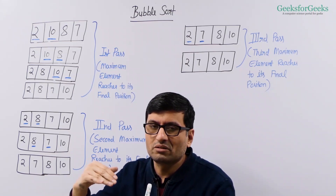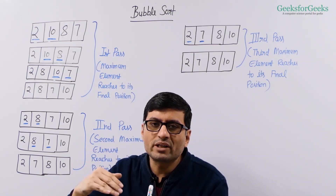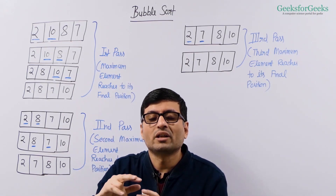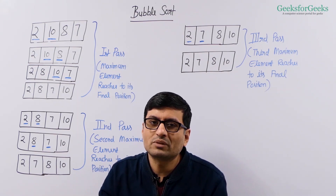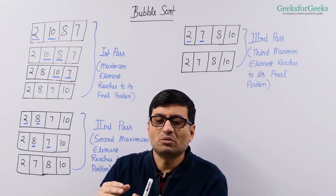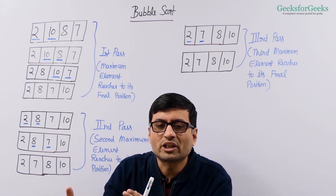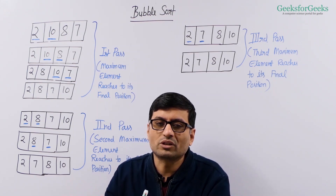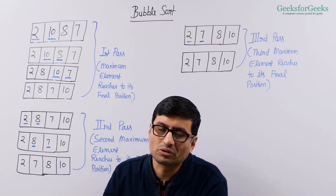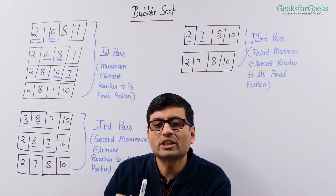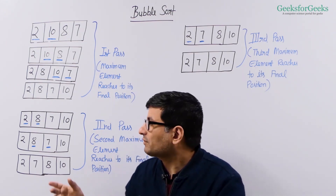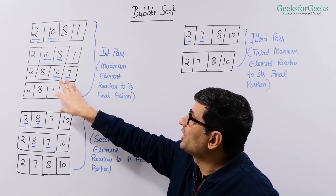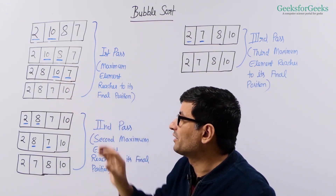You begin from the first element and compare it with the second element. If they are out of order, you swap them. Then you compare the second element to the third element. If they are out of order, you swap them. Then you compare third and fourth, and if they are out of order, you again swap them. This is how you ensure your largest element reaches the last position.